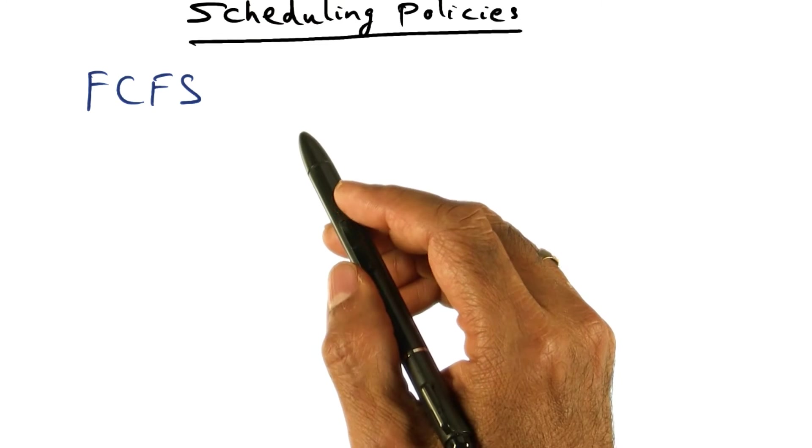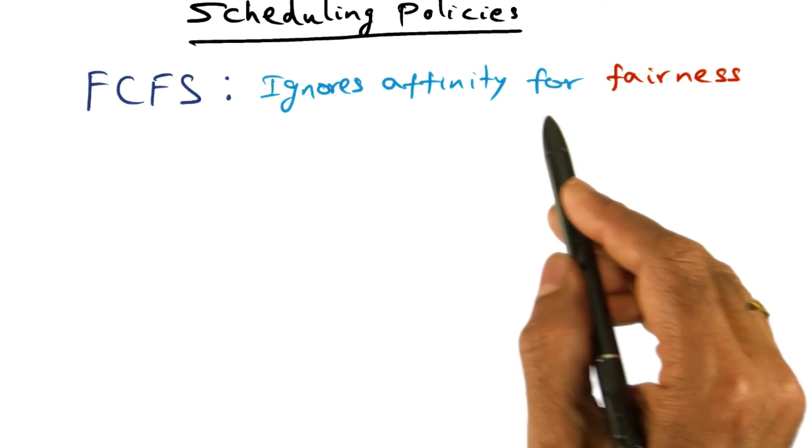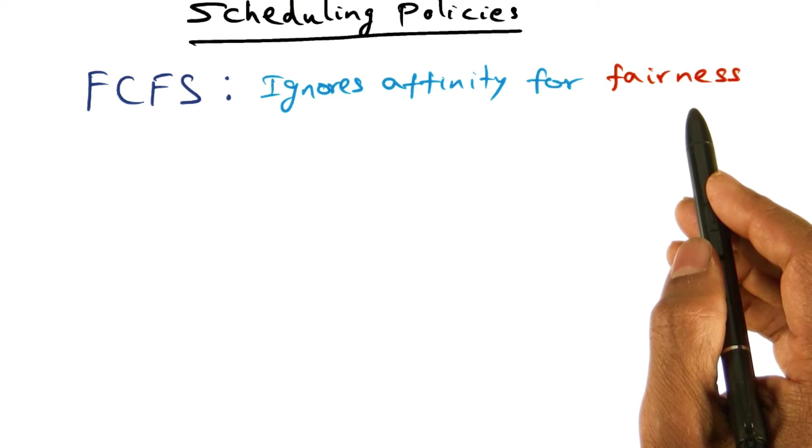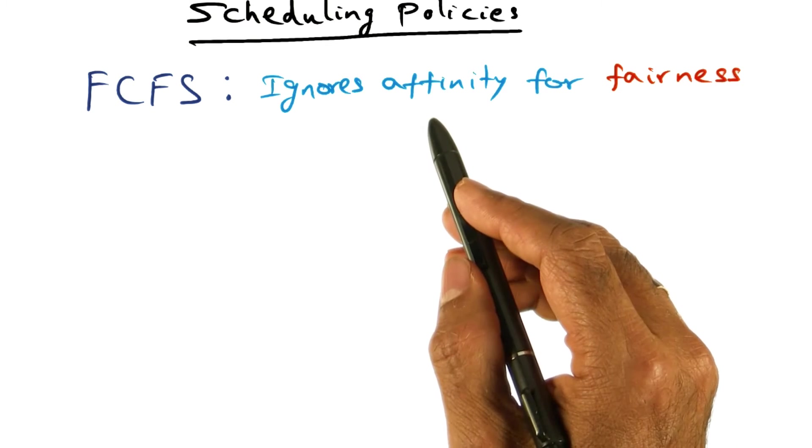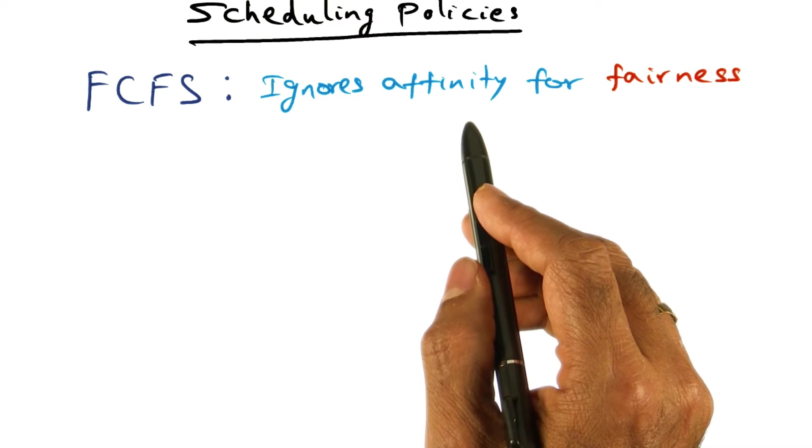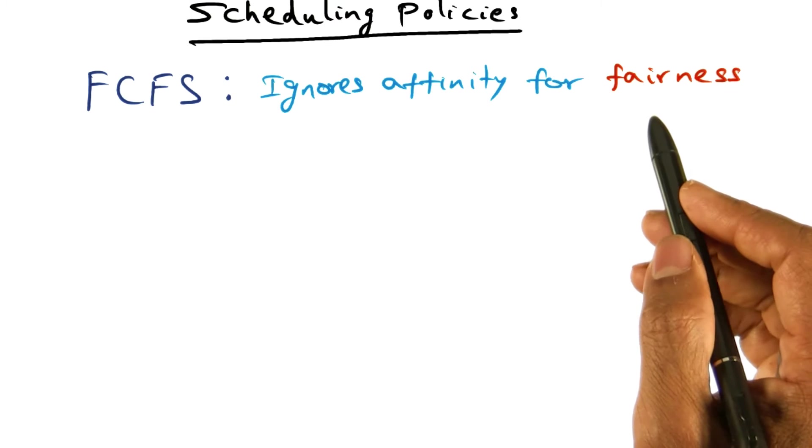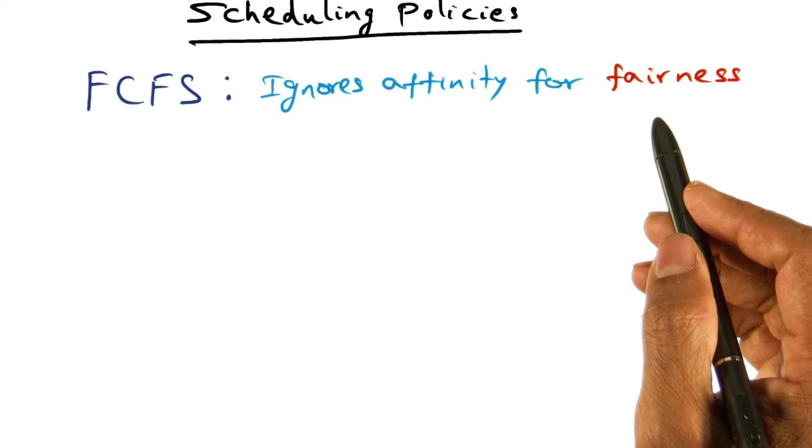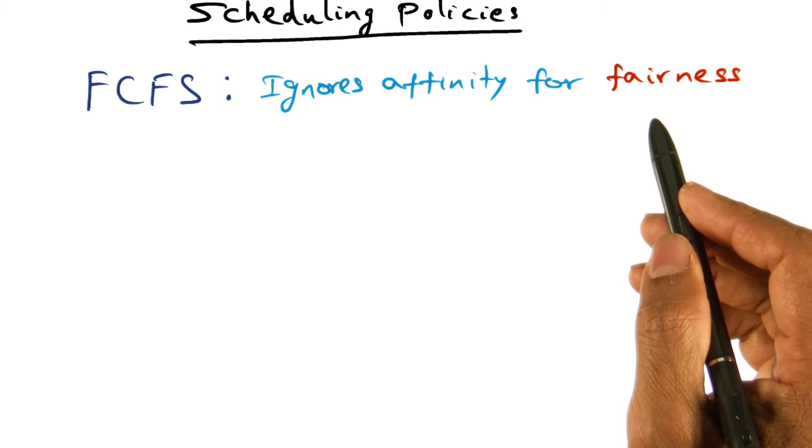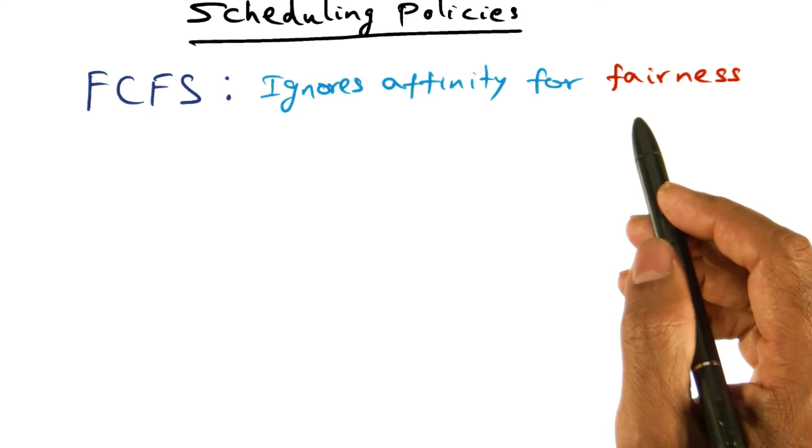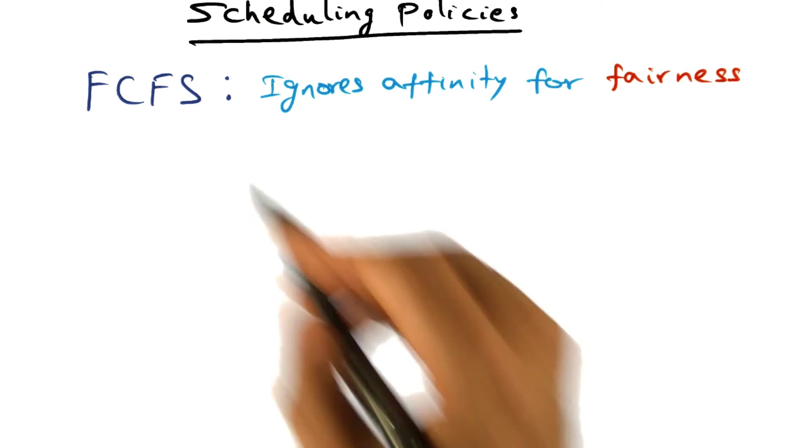What this is saying is, basically, we will give importance to fairness for threads as opposed to affinity. So it is ignoring affinity altogether and simply saying, let's just be fair. We'll pick the thread that became runnable at the earliest. That's the one that we're going to pick as the next one to run on the processor. That's First Come First Served.